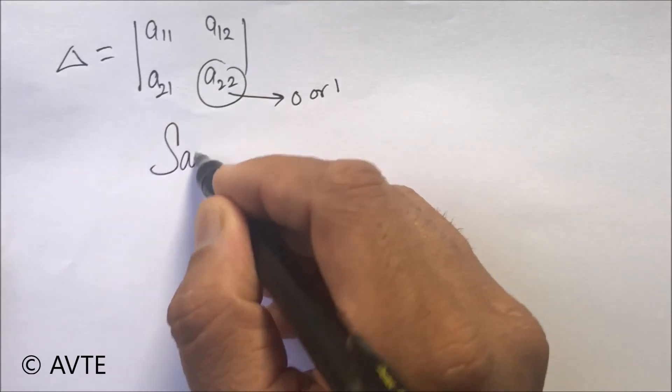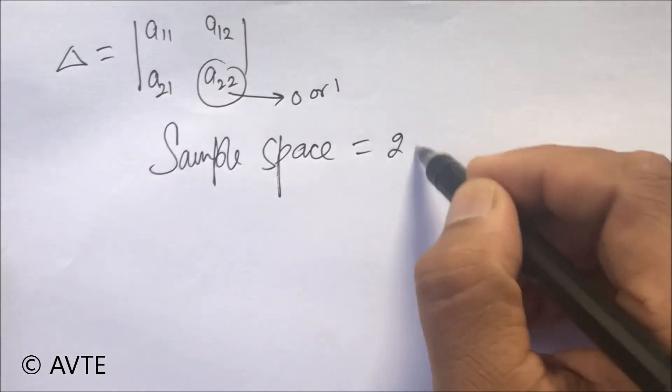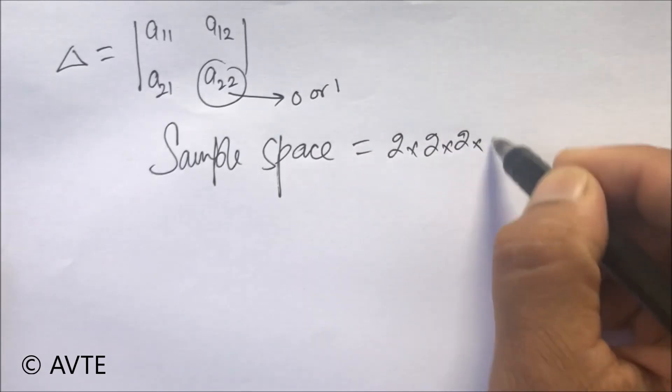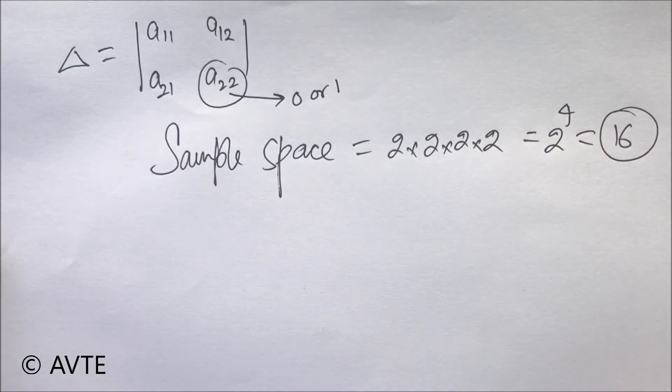So the sample space will be 2 raised to power 4, that is 16. So there are 16 types of determinant possible which can give the value 0 or positive or negative.